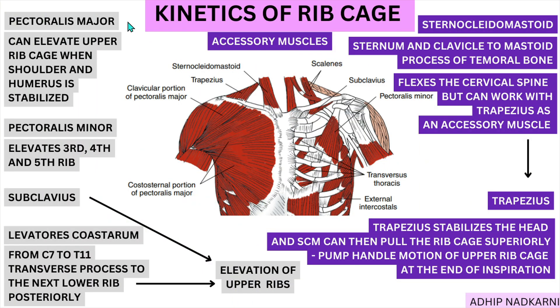Now let's go to pectoralis major. Its function as an accessory muscle can change based on the position of the humerus. Generally, for it to work as an accessory muscle, the distal attachment — that is the humerus and shoulder girdle — needs to be stable. It can elevate the upper ribcage when the shoulder and humerus are stabilized. If the humerus goes up, it will pull the ribcage upward creating a pump handle motion to help inspiration; whereas if it's down, it creates a downward movement helping exhalation. So based on the position of the humerus, pectoralis major's function as an accessory muscle can change.